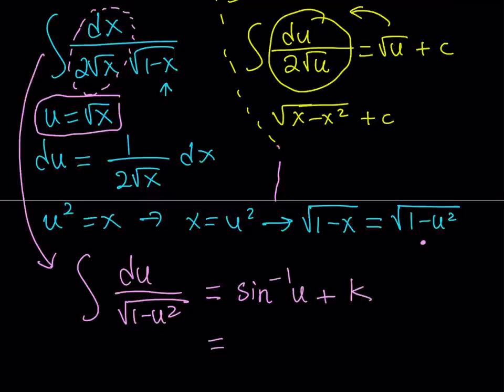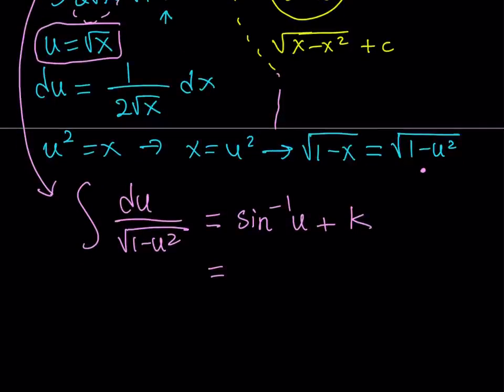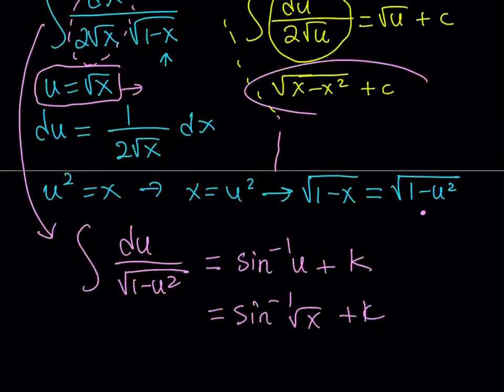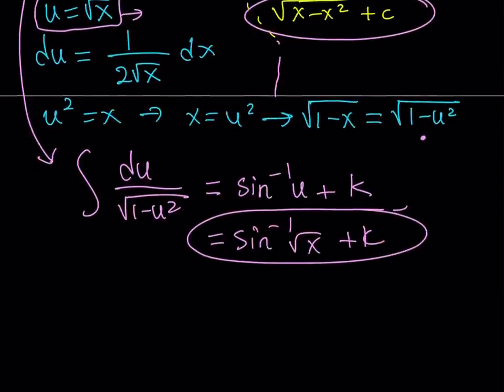These two u's are not the same. My u from the first piece is square root of x. In other words, this is going to be the sine inverse of square root of x plus k. Now we're going to put these two together, this one and this one, and that is going to be the answer to this integral.